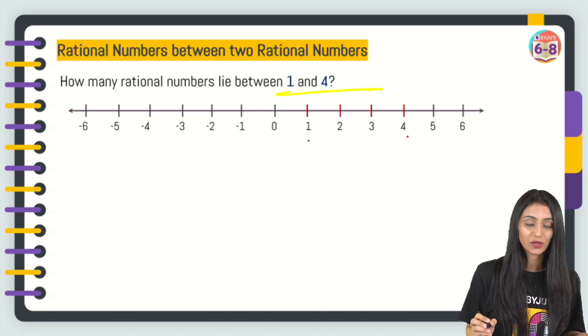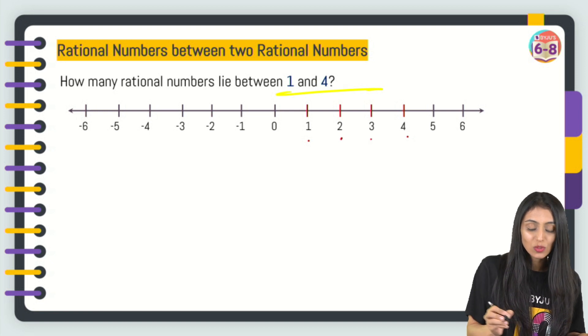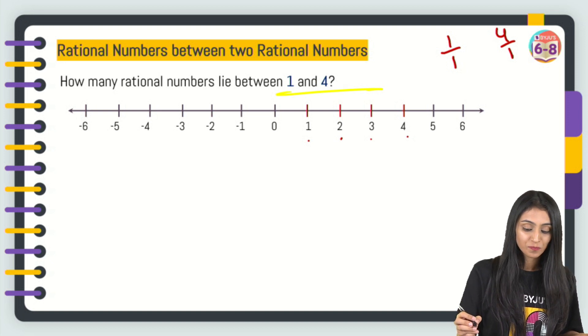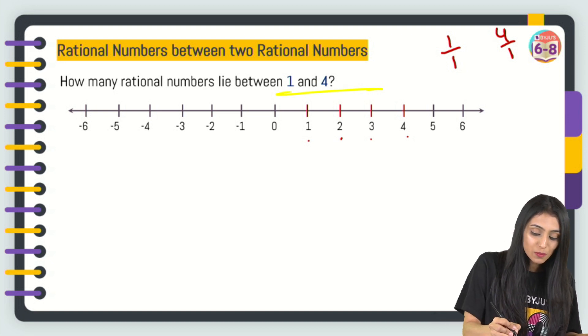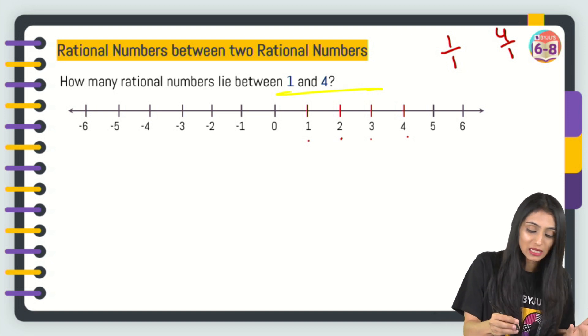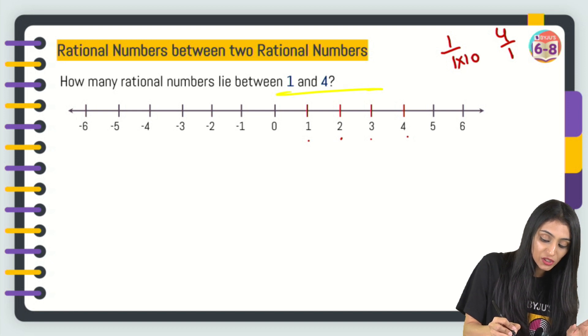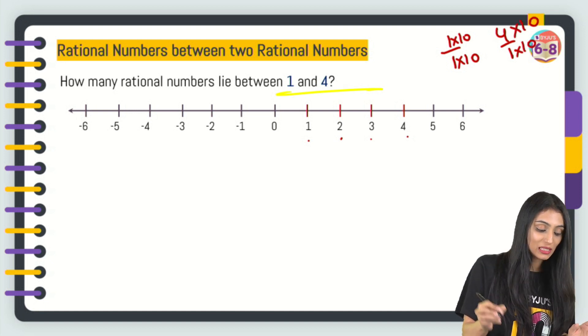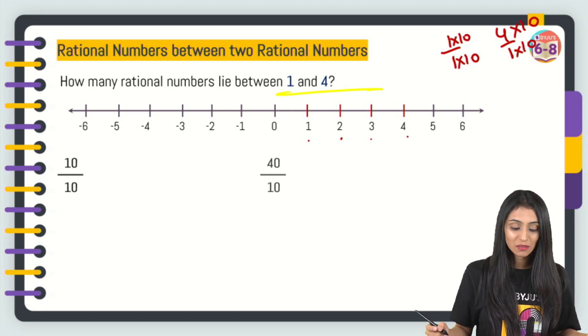Now, we cannot say that only two numbers are lying here. We know that 1 could be written as 1 by 1, 4 could be written as 4 by 1. So, what I'm going to do here is make the denominator same. Let's suppose I multiply the denominator here by 10, I'll multiply the numerator also by 10. Similarly, I'll make the denominator here as well 10. So, we get 10 by 10 and 40 by 10.